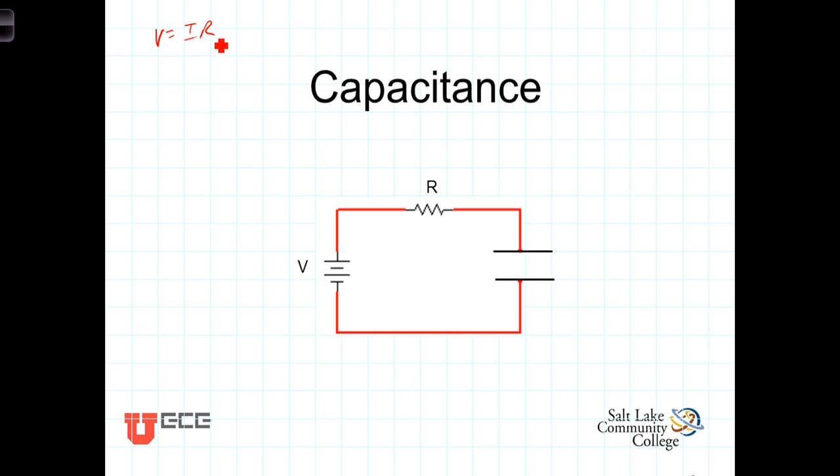Imagine for a long time this voltage source has been disconnected or turned off, and at T equals zero, we apply this voltage to the circuit. Immediately, charged particles begin to flow. We call that current.